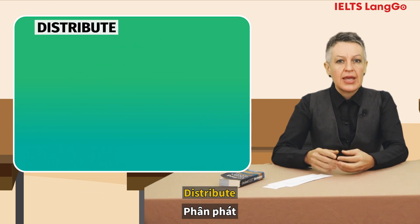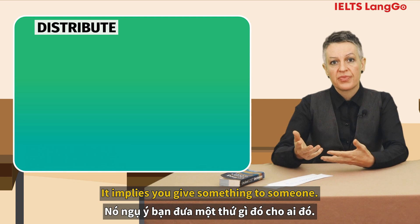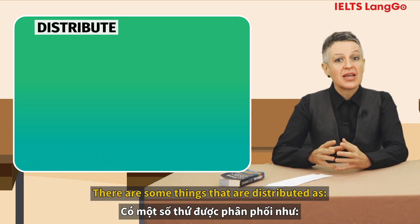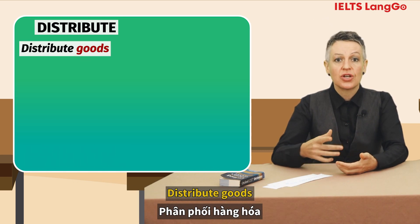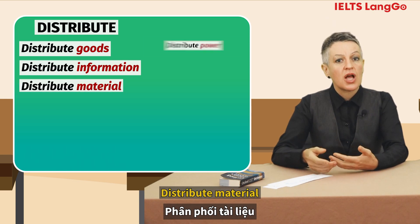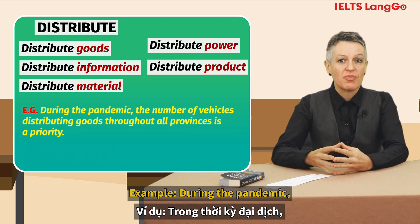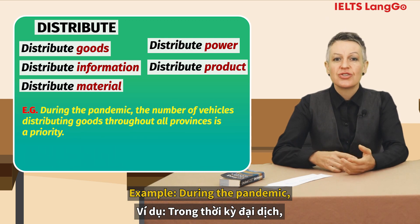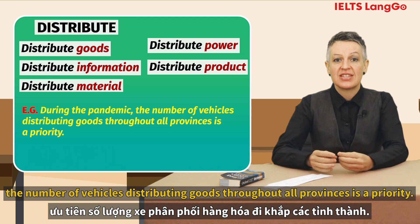'Distribute' implies you give something to someone. There are some things that are distributed: goods, information, material, power, products. Example: during the pandemic, the number of vehicles distributing goods throughout all provinces is a priority.